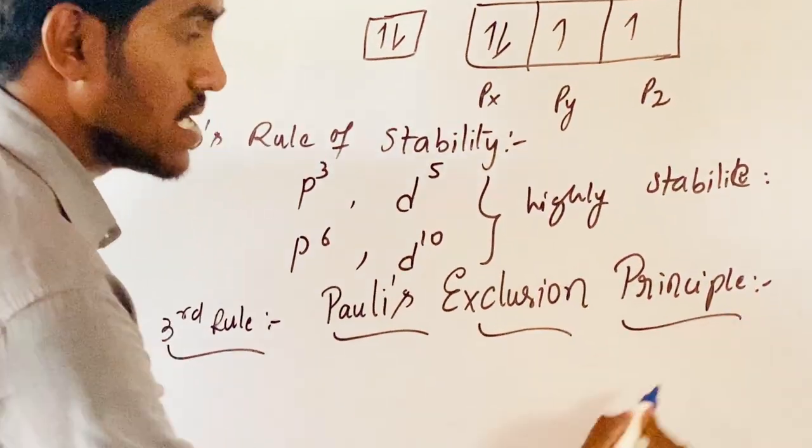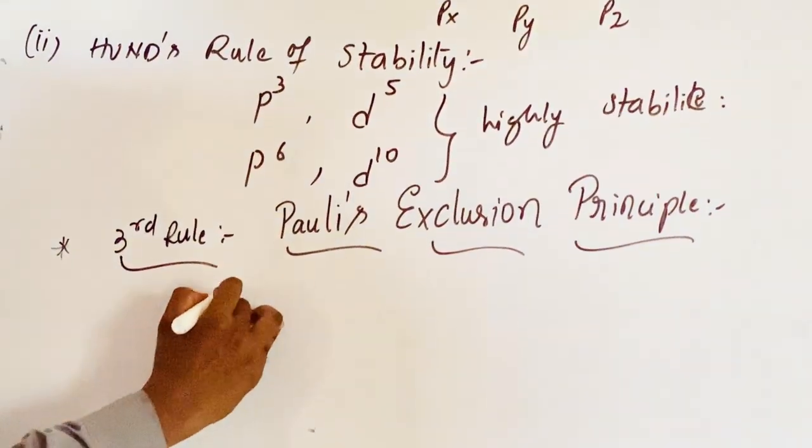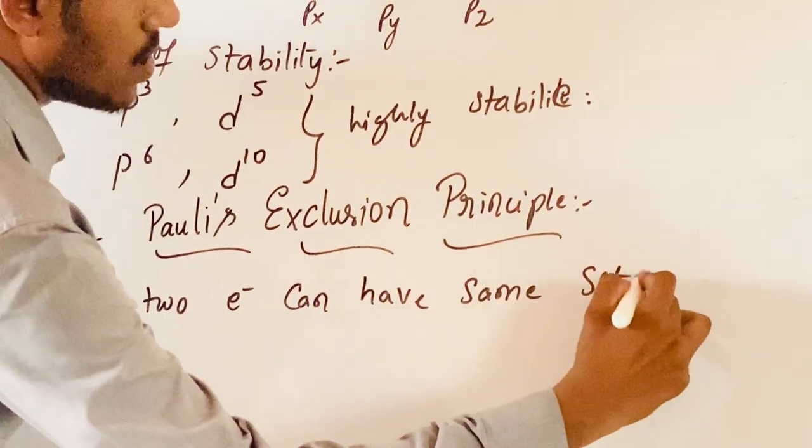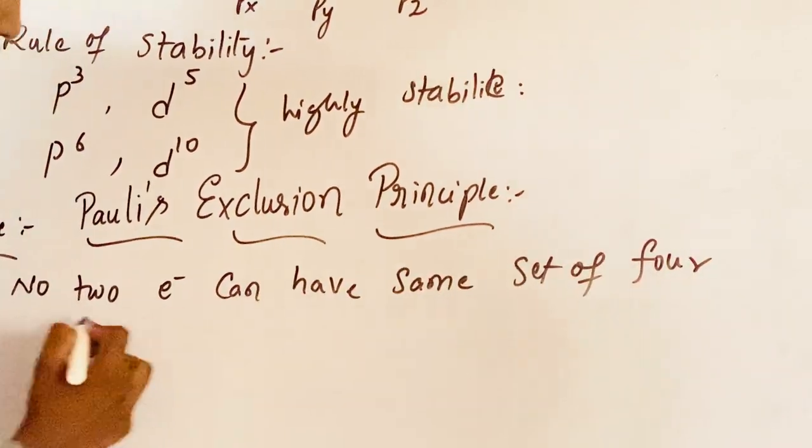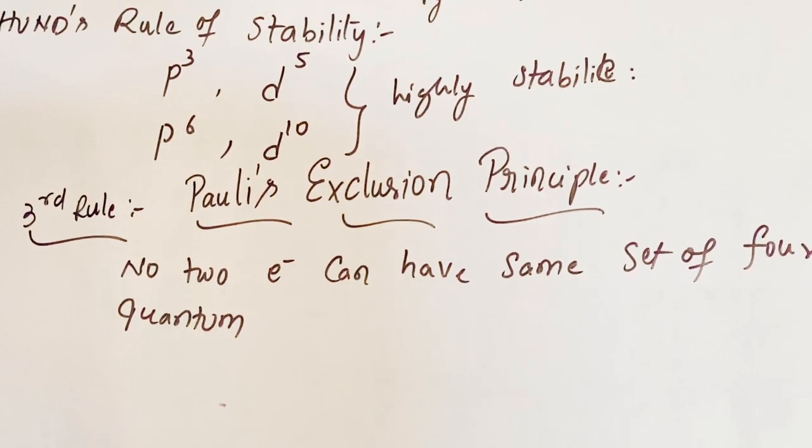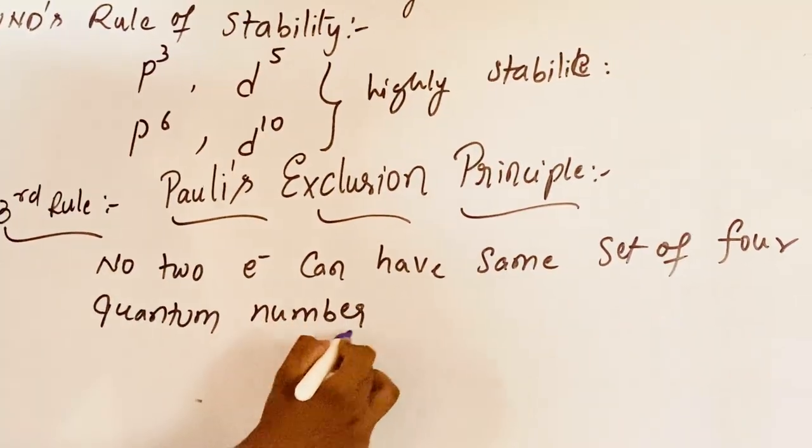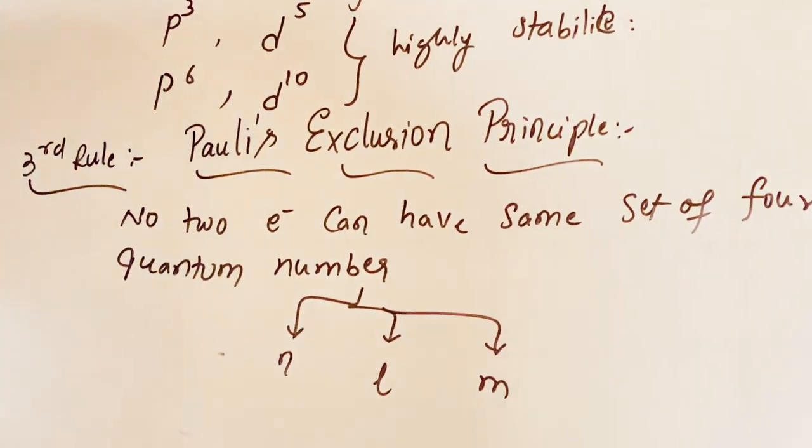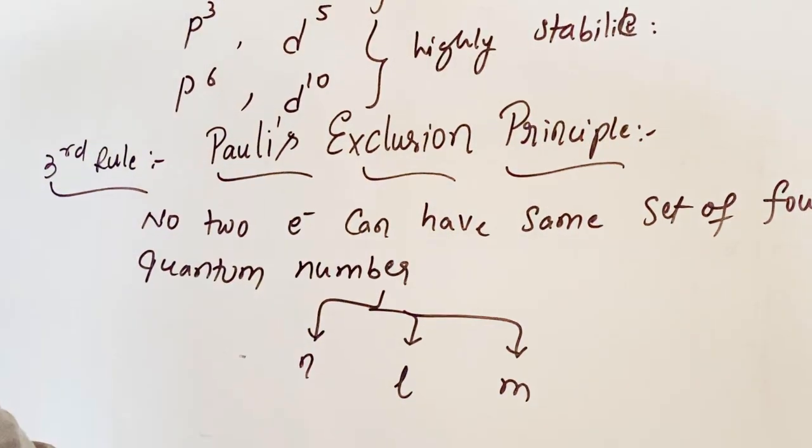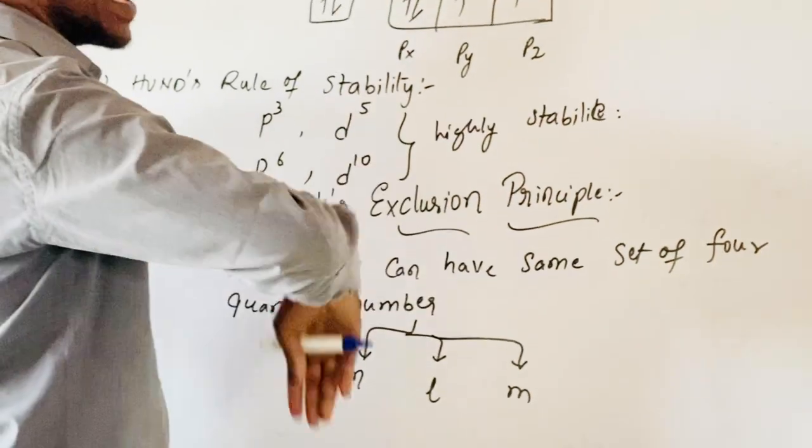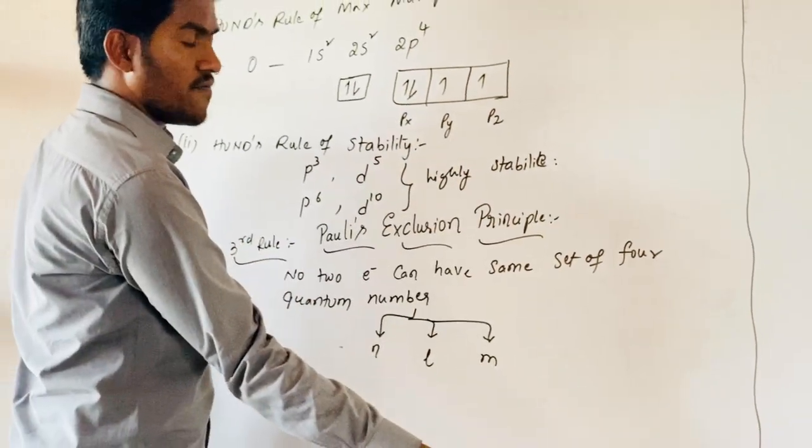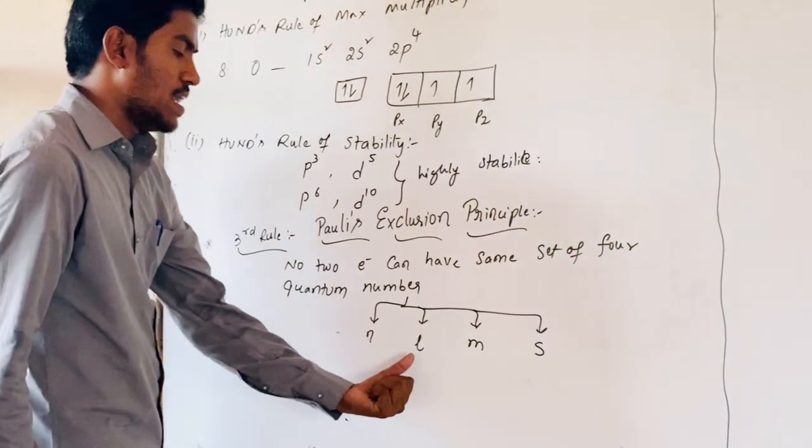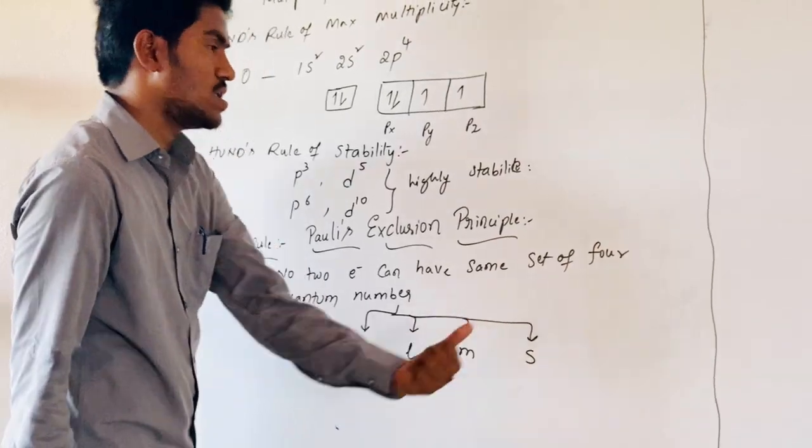Coming to third rule, that is Pauli's Exclusion Principle. The statement is given as, no two electrons can have same set of four quantum numbers. If the electrons are similar in case of principal quantum number n, azimuthal quantum number L, magnetic quantum number M, then the variation is in the spinning of electrons. First electron may spin in clockwise direction. Second electron may spin in anticlockwise direction. Clockwise direction gives positive half. S represents spin quantum number.